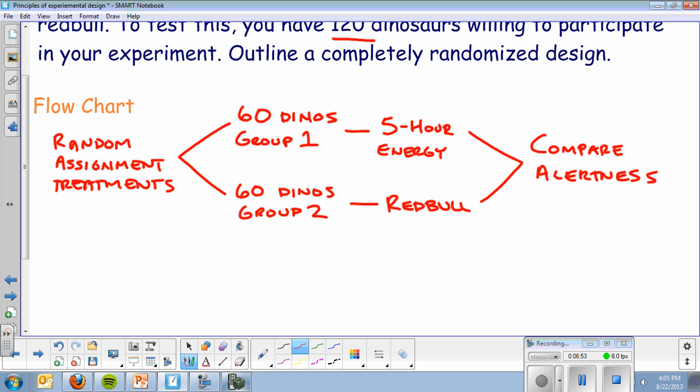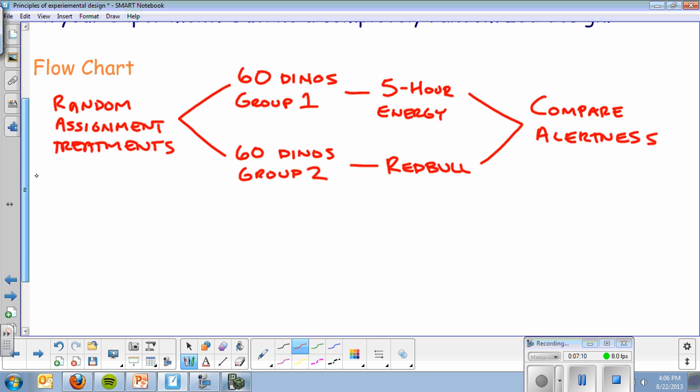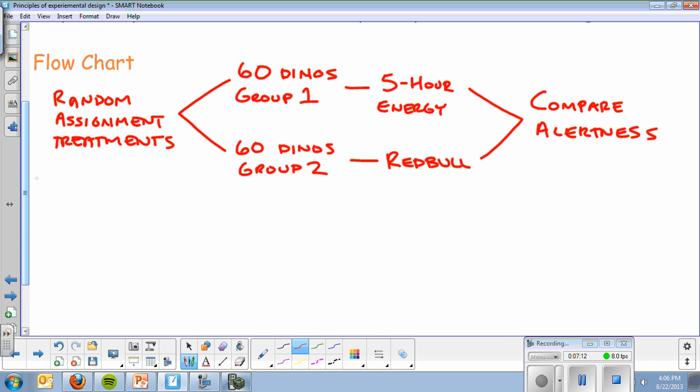Just to review some of the vocab - our experimental units are our dinosaurs. I've got my treatments, our 5-hour energy and Red Bull. And then my alertness is my response variable. This right here is half credit, just for drawing that. What I have to do in addition is the how am I doing my random assignment.